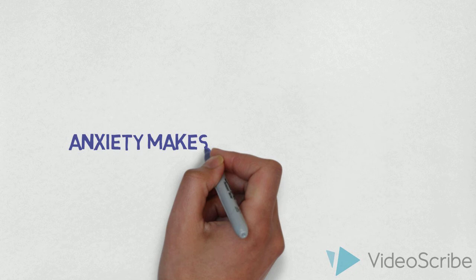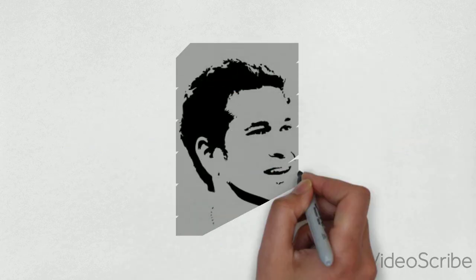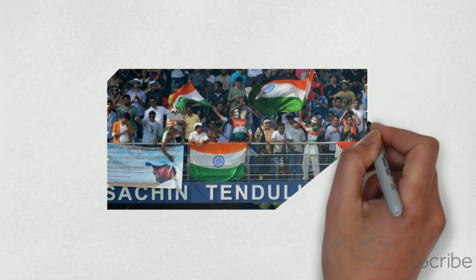The third psychology is that anxiety makes waiting time longer. Now imagine that you are a big fan of Sachin Tendulkar. He is scheduled to play his last test match at the Wankhede Stadium, Mumbai, and you are visiting Mumbai from Delhi during that time.